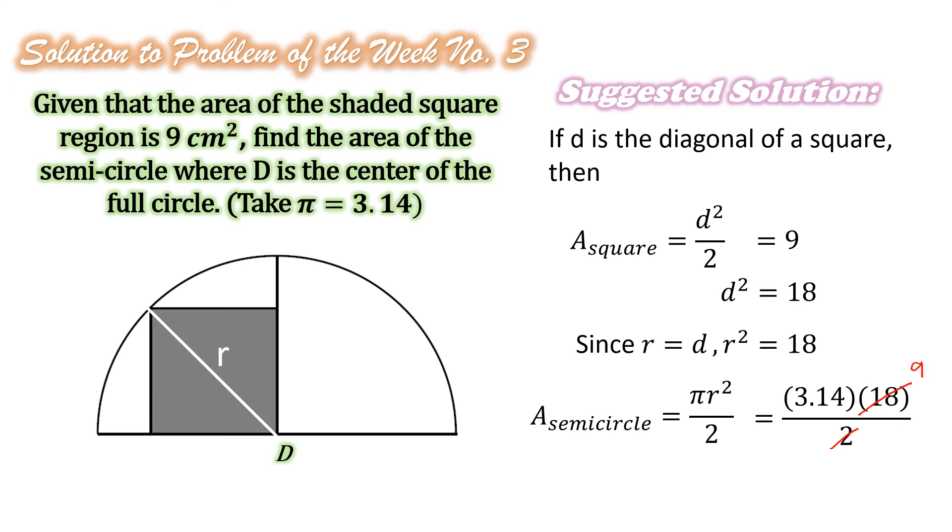So, we have 3.14 times 9 for the area of the semicircle, and that is equal to 28.26 squared centimeters.